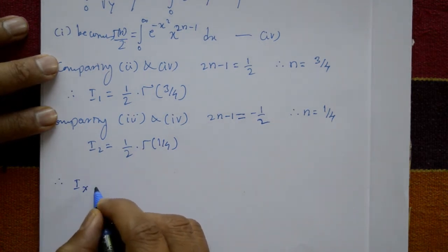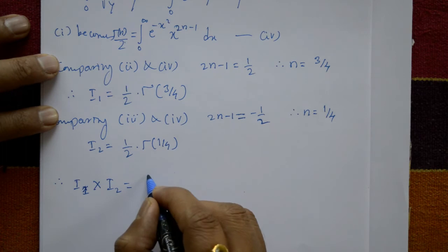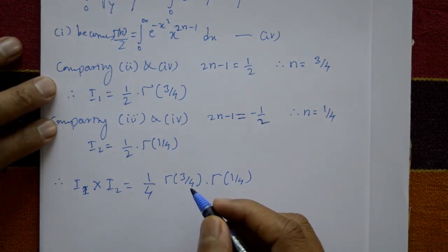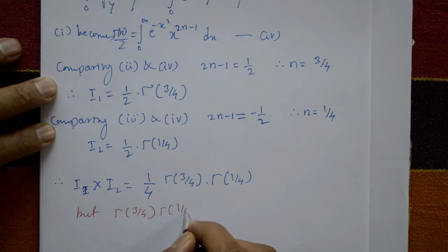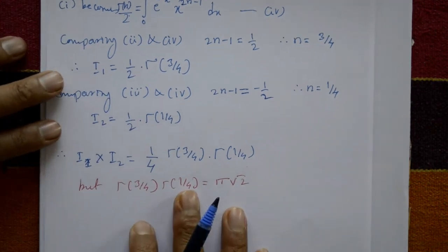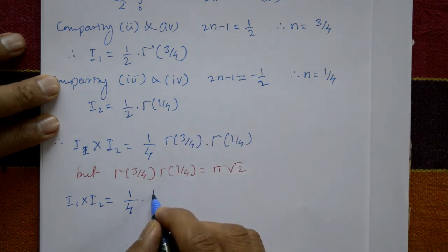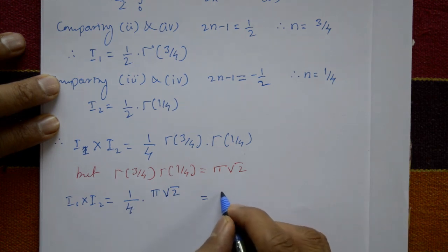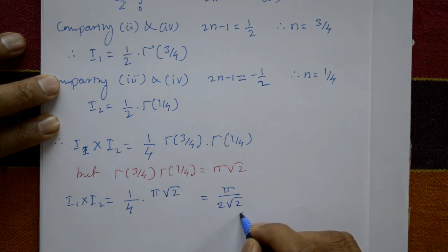Therefore I1 times I2 equals 1/2 times gamma(3/4) multiplied by 1/2 times gamma(1/4), giving 1/4 times gamma(3/4) times gamma(1/4). Using the gamma identity, gamma(1/4) times gamma(3/4) equals pi over sin(pi/4) equals pi times root 2. So I1 times I2 equals pi divided by 4 times root 2, which simplifies to pi upon 2 root 2, giving the required solution.